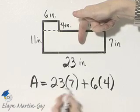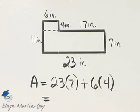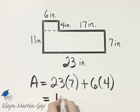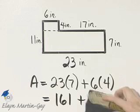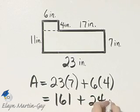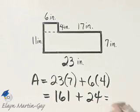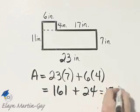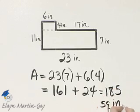This is the area of the larger rectangle plus the area of the smaller rectangle. So if I multiply here, I'll have 161. Here, 24. And then if I add those two areas, 161 plus 24, that equals 185. And that is what? Square inches. The area is 185 square inches.